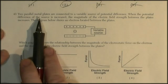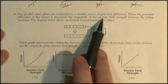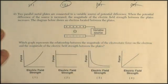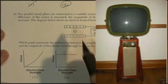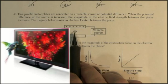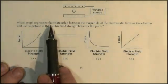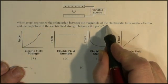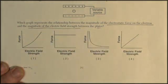Question 43. Two parallel metal plates are connected to a variable source of potential difference. When the potential difference of the source is increased, the magnitude of the electric field strength between the plates increases. The diagram below shows an electron located between the plates. Now this type of problem used to be very common. Everybody had a television set that had a picture tube in it. And a picture tube had electric plates that shot electrons between them. Very common. Very important. Nowadays with the LED TVs and the plasma TVs, it's harder and harder to find a situation where this is applicable. But we can still answer it. So they want us to know which graph represents a relationship between the magnitude of the electrostatic force on the electron and the magnitude of the electric field strength between the plates. I don't know how to do this, but I bet you there's a formula somewhere.